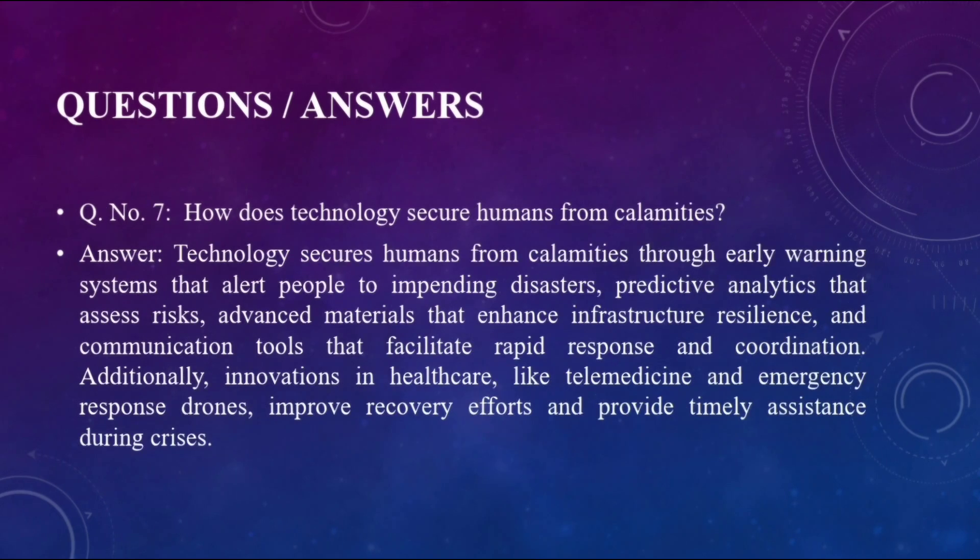Question seven: how does technology secure humans from calamities? Answer: technology secures humans from calamities through early warning systems that alert people to impending disasters, predictive analytics that assess risks, advanced materials that enhance infrastructure resilience, and communication tools that facilitate rapid response and coordination. Additionally, innovations in healthcare like telemedicine and emergency response drones improve recovery efforts and provide timely assistance during crises.